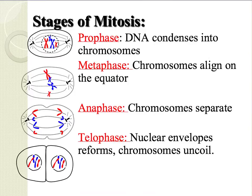The stages of mitosis include prophase, where the nuclear envelope starts disappearing, the DNA condenses into chromosomes, and this is the first stage where we can see the X-shaped chromosomes. Metaphase is where chromosomes align on the equator. Anaphase is where the chromosomes or sister chromatids are separated. And telophase is where the nuclear envelope reforms and the chromosomes unwind or uncoil back into their chromatin form.